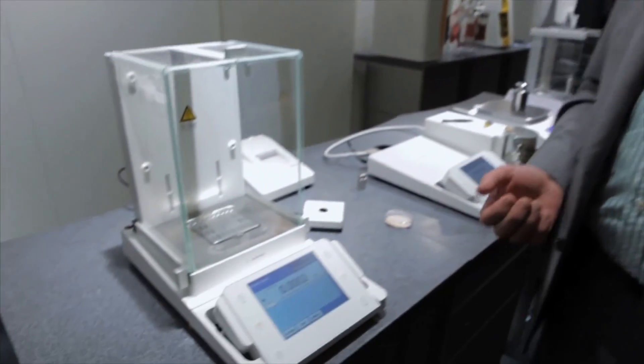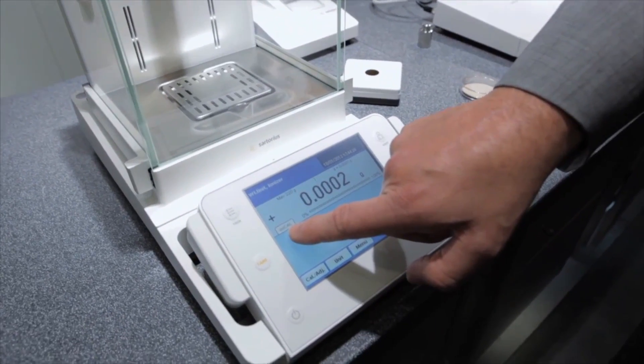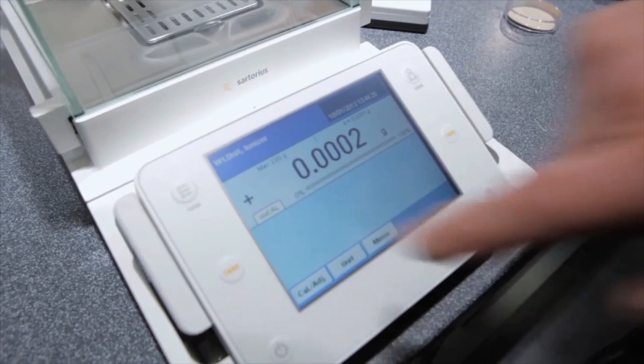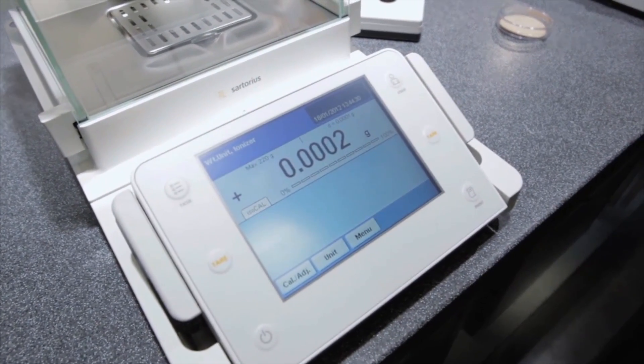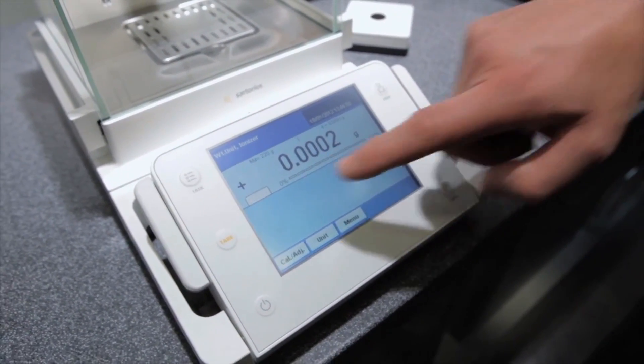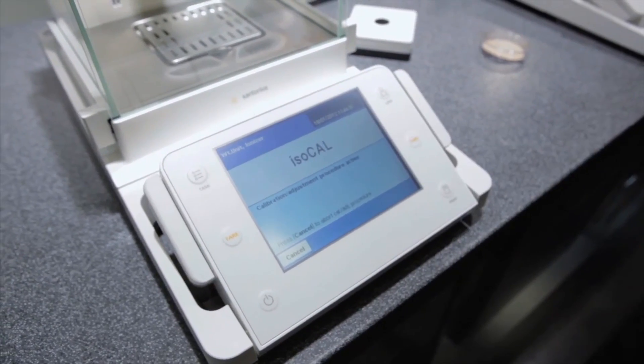Internal adjustment is happening at the balance as well. If the temperature changes we're able to see here isocal which is saying we should adjust the balance to bring the balance back into calibration. This will happen automatically or we can push the key ensuring that the internal adjustment is happening.